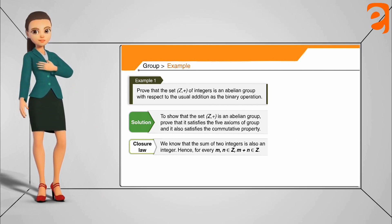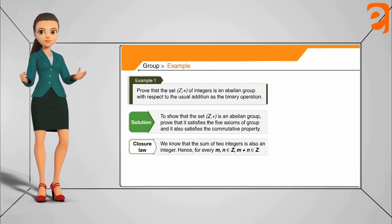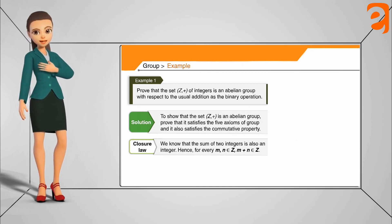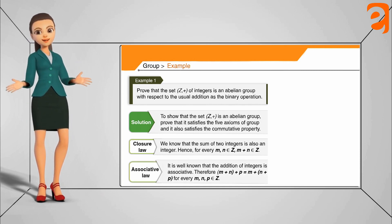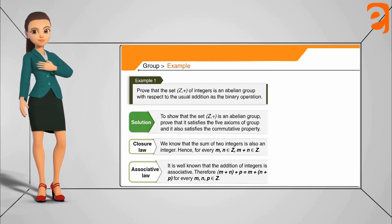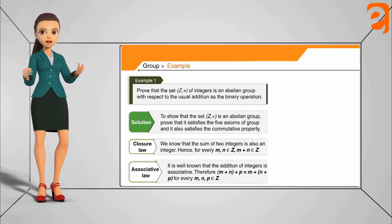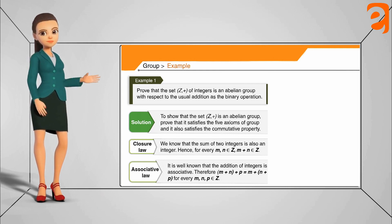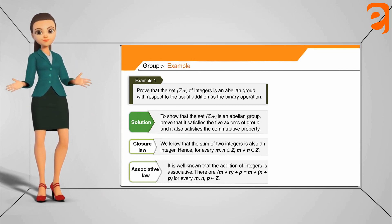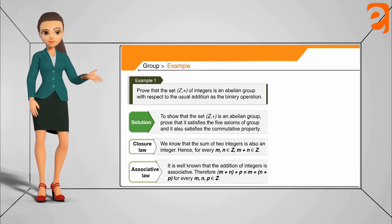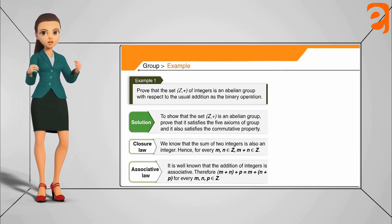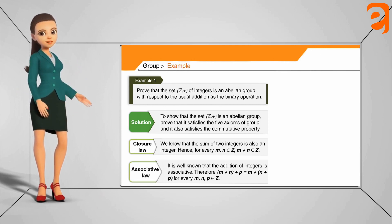Closure property: let m and n be two elements from Z. The addition of two integers is always an integer, so m + n is also in Z. Associativity: for three elements m, n, p from Z, (m + n) + p equals m + (n + p), which is true for all integers. So the associativity law holds for Z with addition.